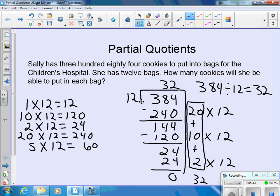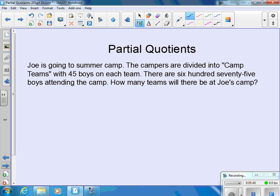Now let's look at our next example problem. Joe is going to summer camp. The campers are divided into camp teams with 45 boys on each team. There are 675 boys attending the camp. How many teams will there be at Joe's camp?